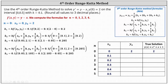Moving to k sub 3, k sub 3 equals h times f of x sub 0 plus one-half h comma y sub 0 plus one-half k sub 2, where h is 0.1, x sub 0 is 0, y sub 0 is 2, and k sub 2 is 0.205. Simplifying, we have 0.1 times f of 0.05 comma 2.103, which equals 0.1 times the difference of 2.103 and 0.05, which is 0.205.